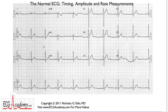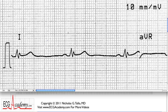This is an ECG, a normal one from an 18-year-old — about as normal as it gets. Let's look at a high-resolution scan of this cardiogram. On this scan, you can see there is a grid with heavy lines moving across and up and down, creating large squares. Within each large square, there are small squares.